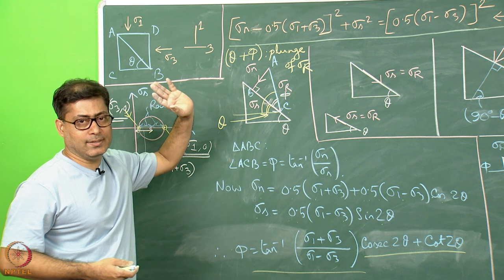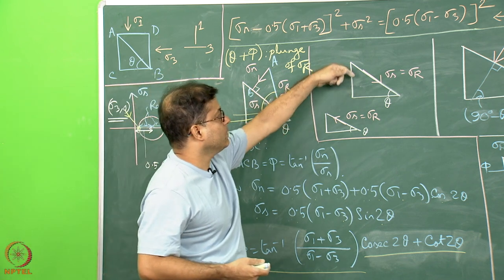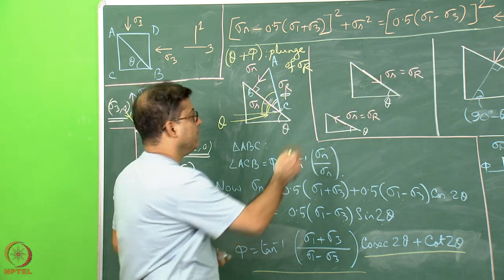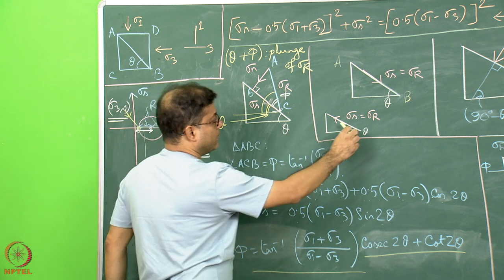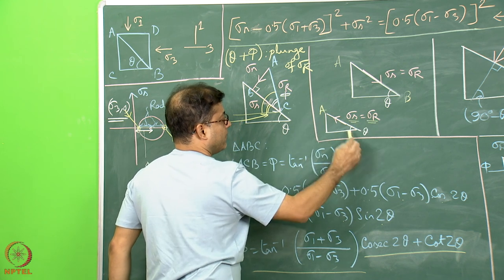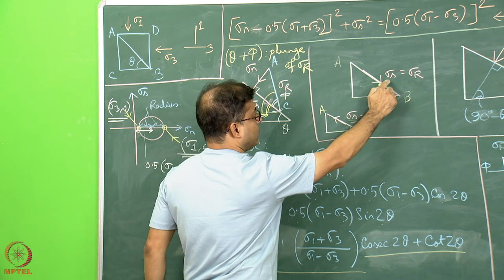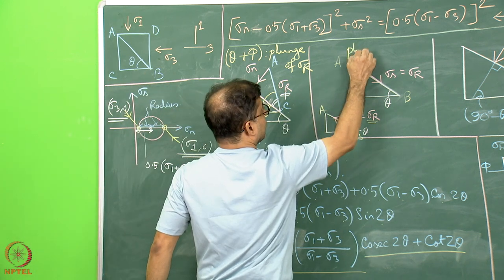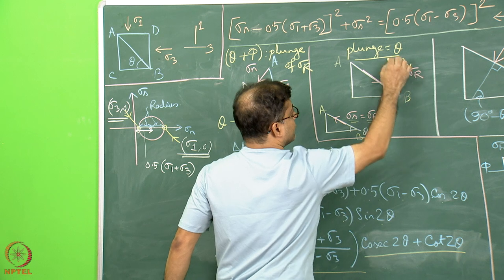If sigma N cancels out and sigma S acts only in the down-plunge direction, then sigma S itself is the resultant stress sigma R acting on the AB plane, which dips at angle theta. Similarly, if sigma S acts in an up-plunge direction, sigma S equals the resultant stress. In both these cases, the plunge of the line of action of sigma S — and hence sigma R — is simply theta, the dip of the given plane.